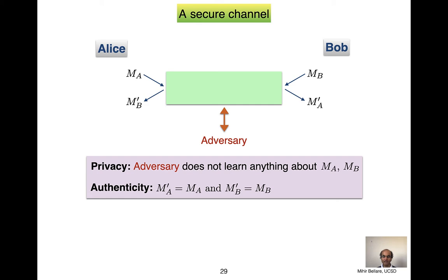We can now look at our different concerns. Privacy is about whether the adversary learns something about the content of the message — does it learn what M_A is? Since Bob can also be sending data, he sends M_B and M'_B pops out for Alice. Privacy would require the adversary not to learn anything about M_B. Why have we put primes on the received messages? Because maybe they're not the same as the sent ones — the adversary may have tampered with them, which would be a violation of authenticity. Authenticity requires that the messages coming out are the same as the ones going in.